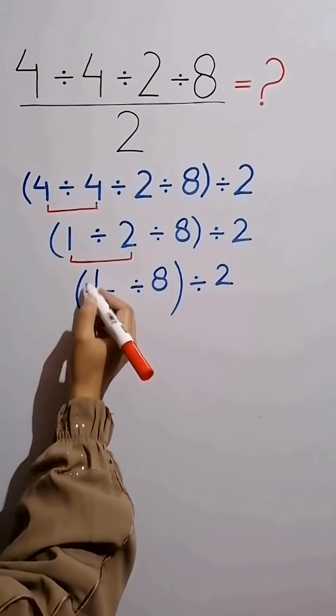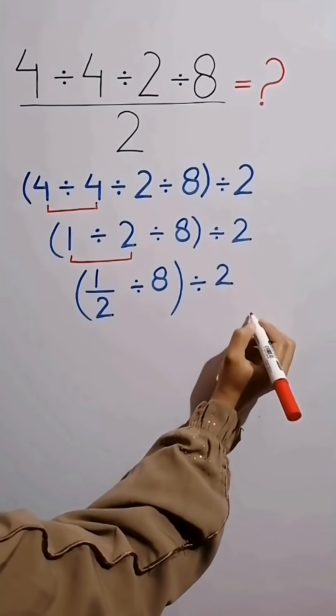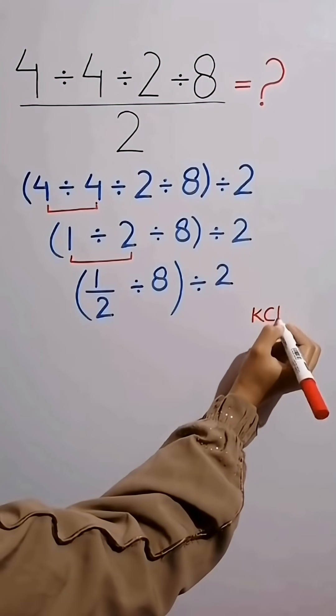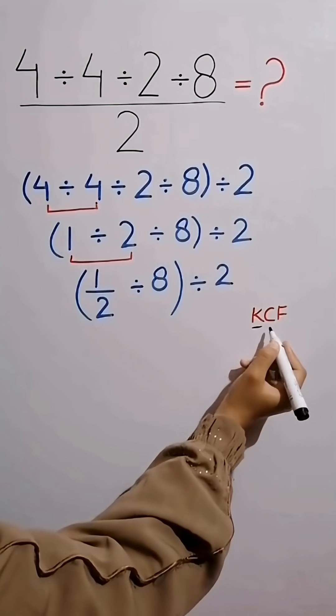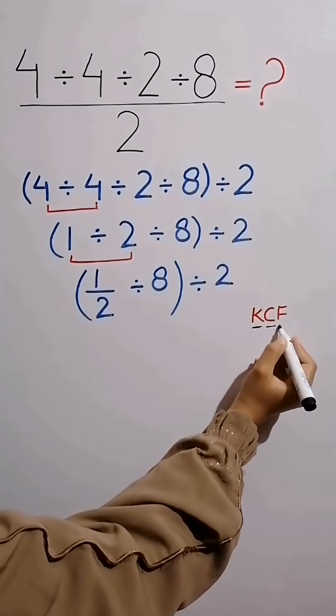Whenever we see a division sign between two terms, the best thing to do is to apply the KCF rule. K stands for keep, C stands for change, F stands for flip.